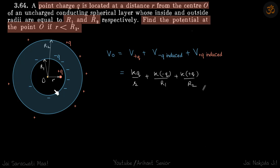We are given a conductor shaped like this — it's a spherical shell. From the center, at a distance r, we have kept a charge plus q. We need to find what is the potential at point O, at the center.